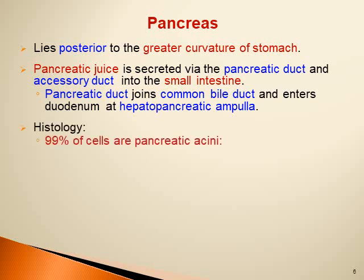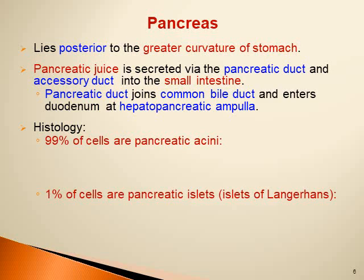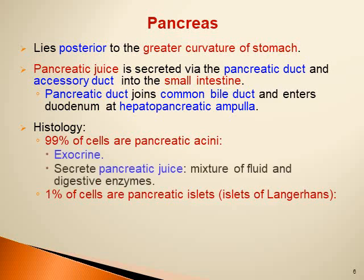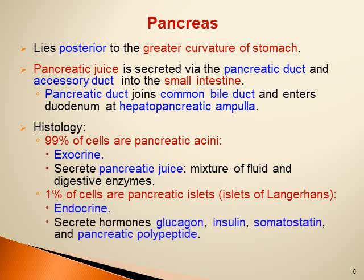Histologically, the pancreas is composed of pancreatic acini — 99% of pancreatic tissue is exocrine acini. The pancreatic acini secrete pancreatic juice which is a mixture of fluid and digestive enzymes: mainly water, bicarbonate, and digestive enzymes that help in the digestion of chyme in the small intestine. The pancreatic islets, the endocrine part, secrete hormones: glucagon, insulin, somatostatin, and pancreatic polypeptide.